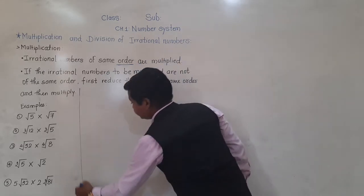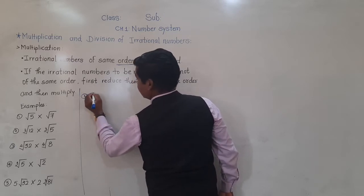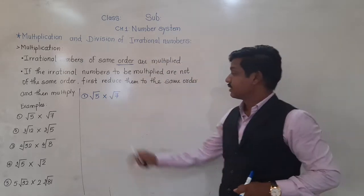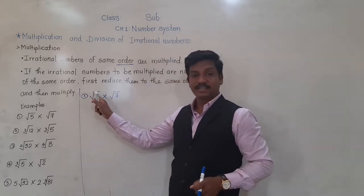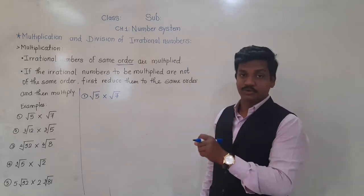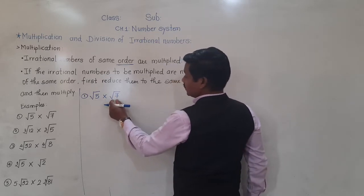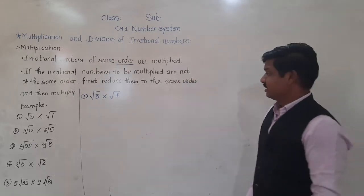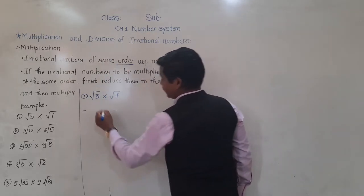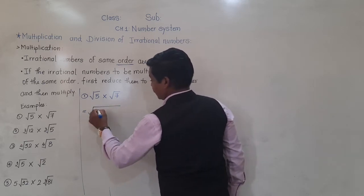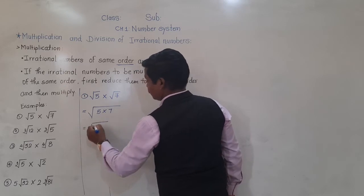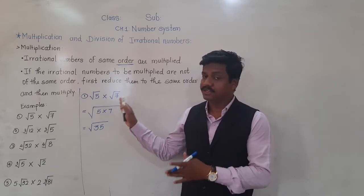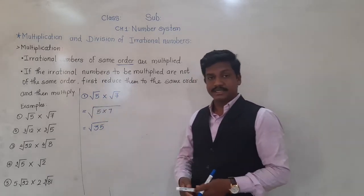Let us see the first example: square root of 5 into square root of 7. Here, the order of these two irrational numbers is not written, which means the order is 2 — it is square root. So square root of 5 into square root of 7. Their orders are same. That means this example belongs to the first rule. If order is same, we can multiply directly: 5 into 7 gives square root of 35.